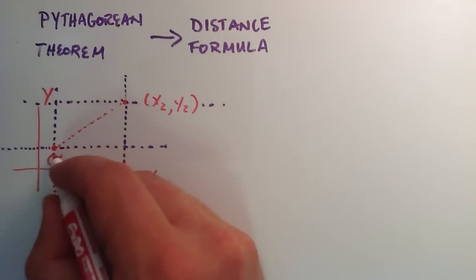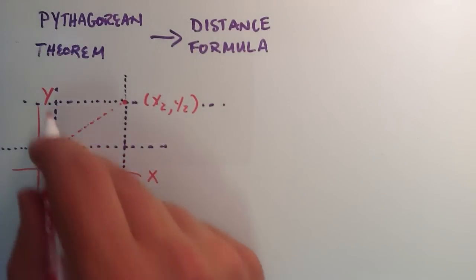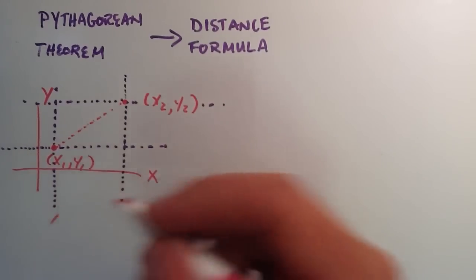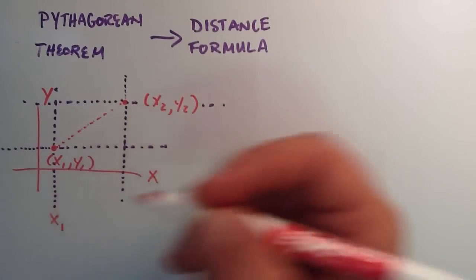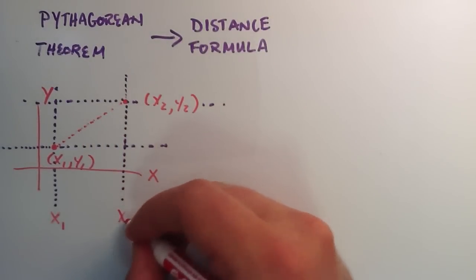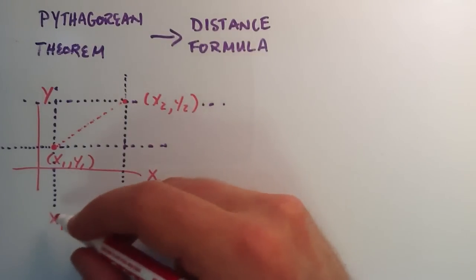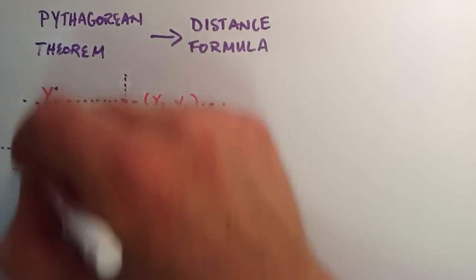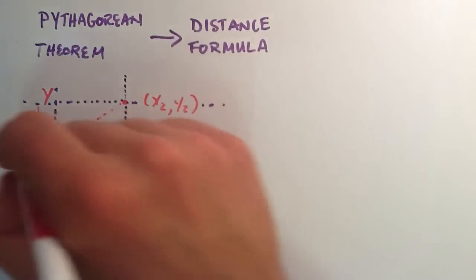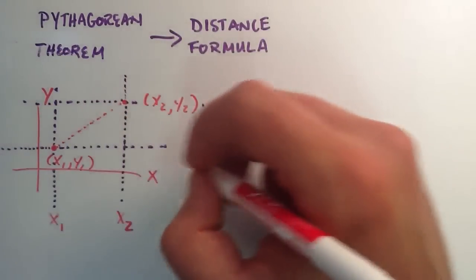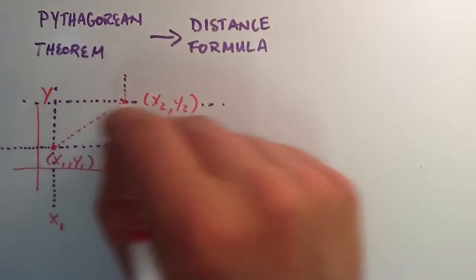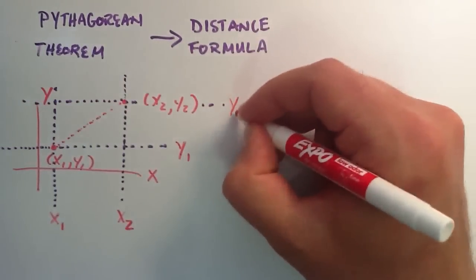What I mean by that is: anything that falls on this line is going to have an x-component of x1. And anything that falls on this line will have an x-component of x2, because these lines are parallel to the y-axis. And anything on this line is going to have a y-component of y1, and on this line, a y-component of y2.